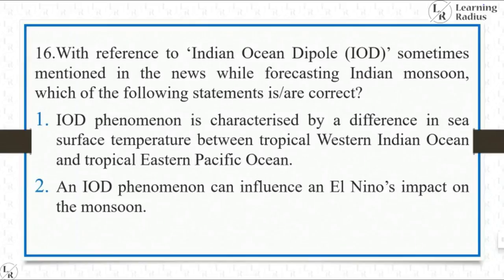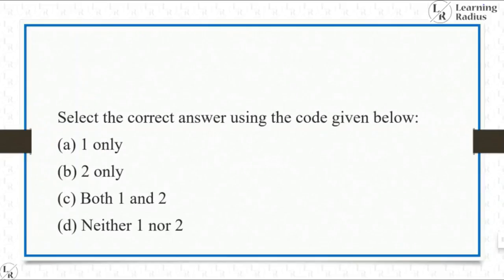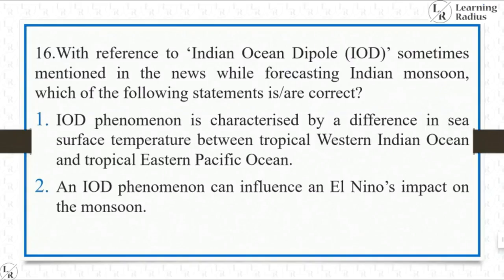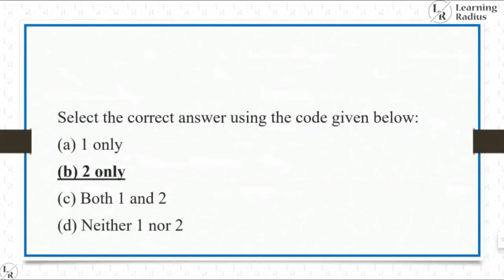With reference to the Indian Ocean Dipole, sometimes mentioned in the news while forecasting Indian Monsoon, which of the following statements is correct? Statement 1: The IOD phenomenon is characterized by a difference in sea surface temperature between the tropical western Indian Ocean and the tropical eastern Indian Ocean — this statement as read is wrong as the question context noted. Statement 2: The IOD phenomenon can influence an El Niño impact on the monsoon — that is right. The first statement is wrong and the second statement is right, so the answer is B, two only.